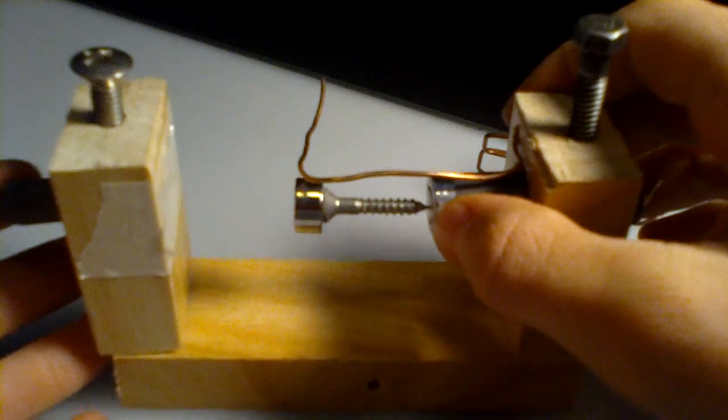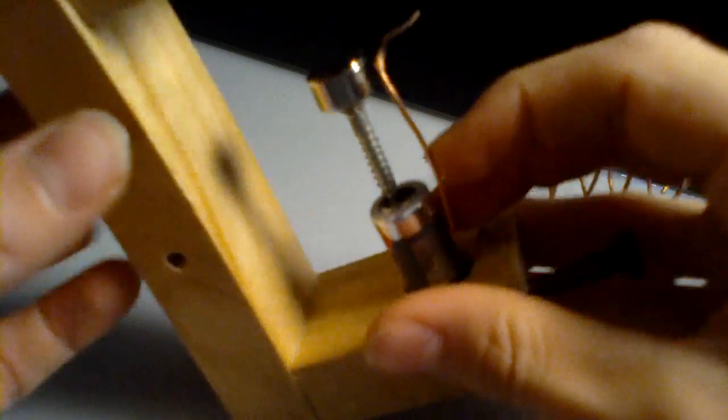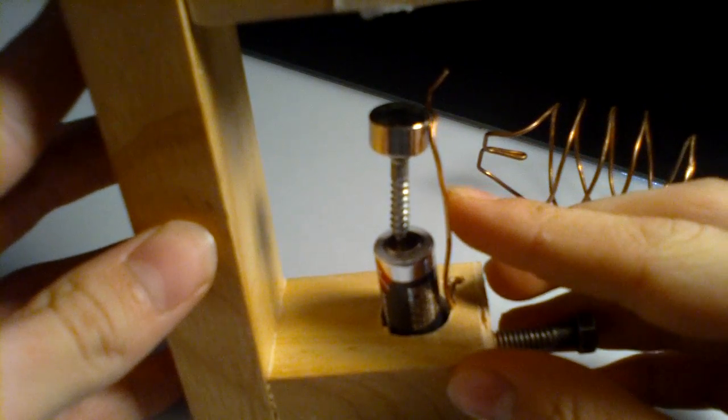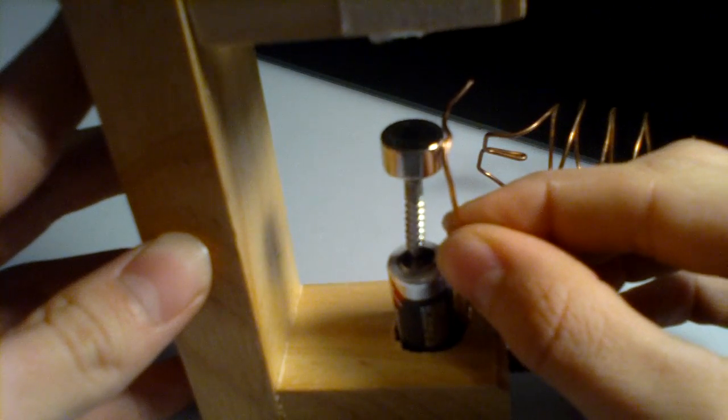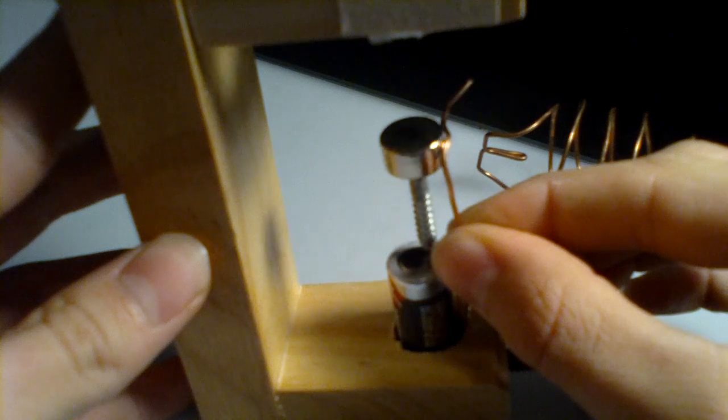And the copper wire is touching the positive terminal on the battery. So for this one to work, you just have to push on that gently so that the copper will contact the screw with the magnet on it.